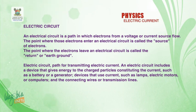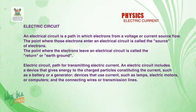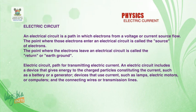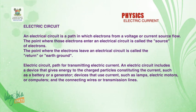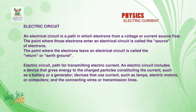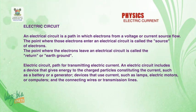An electric circuit includes a device that gives energy to the charged particles constituting the current, such as a battery or a generator, and devices that use current, such as a lamp, electric motor, or computer, and the connecting wires. What we are simply saying is that an electric circuit is the path through which charges flow. When talking about electric circuits, we need certain components like connecting wires, the load, and the switch.